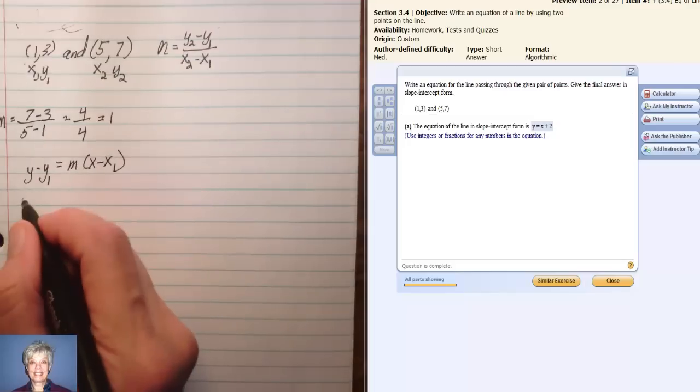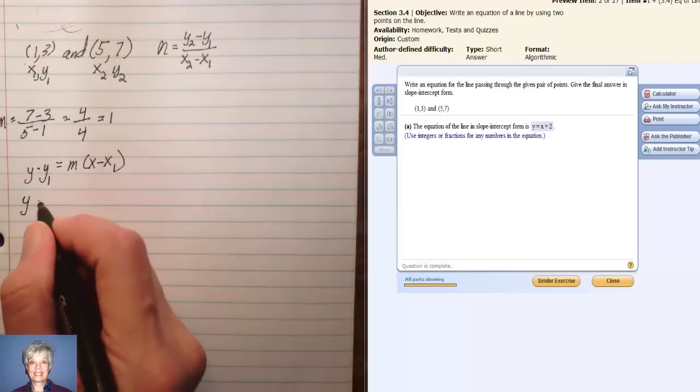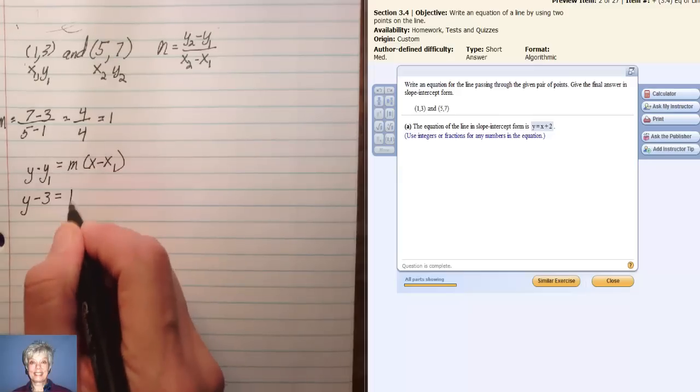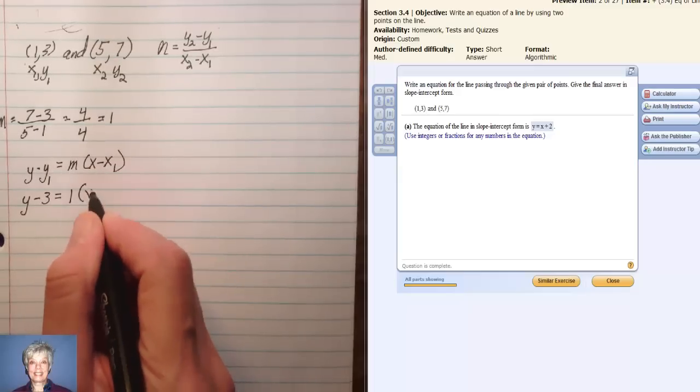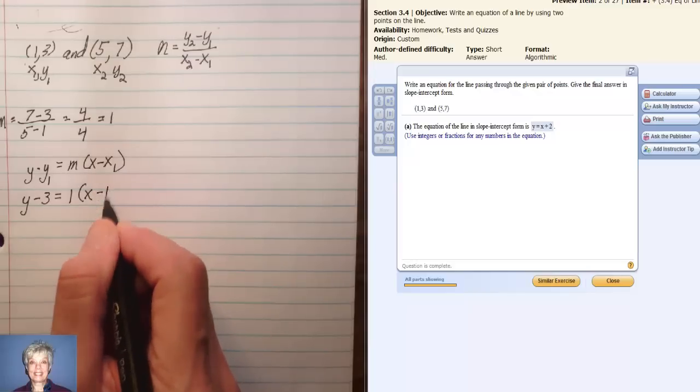Okay, here we go. Y minus y₁ equals m times the quantity x minus x₁.